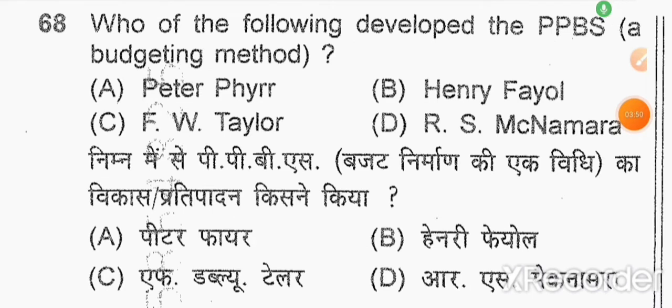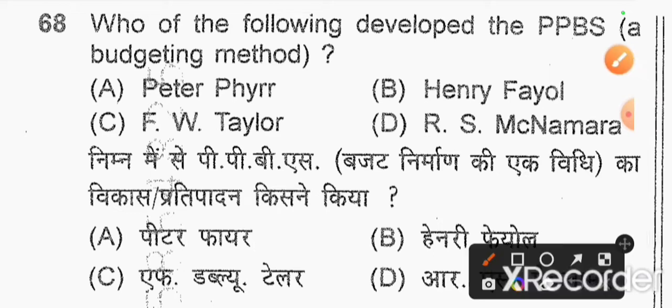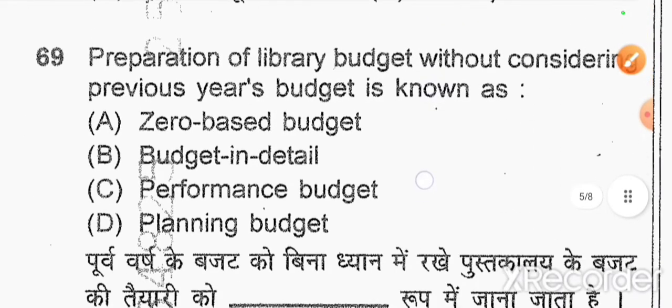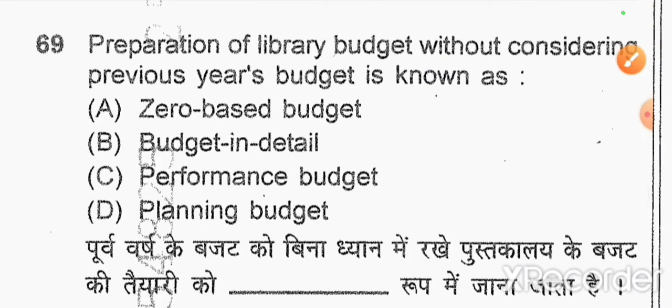Question number 68: who developed the PPBS budgeting method? Option D — RS McNamara. Question number 69: preparation of a library budget without considering the previous year's budget is known as — option A — zero base budget.